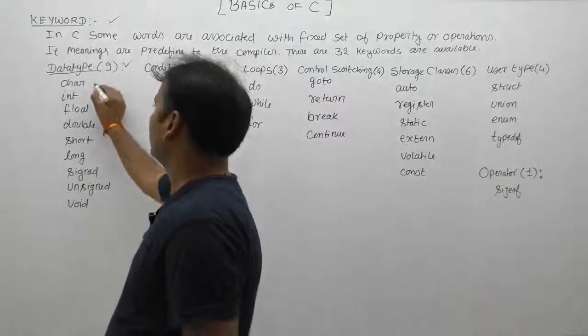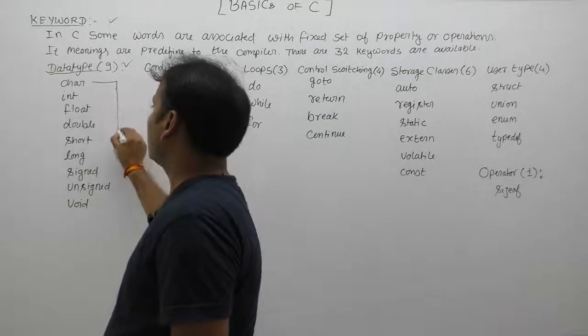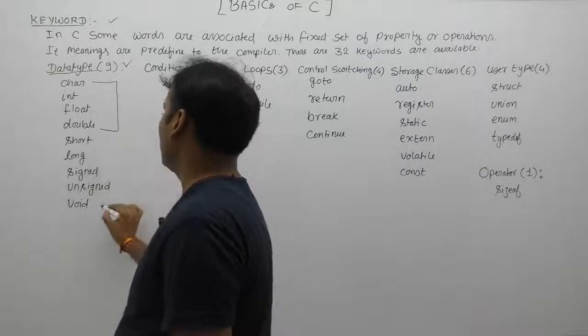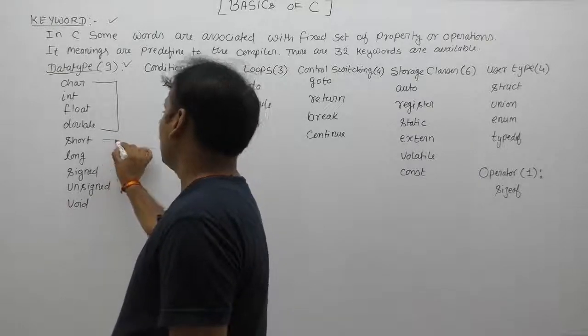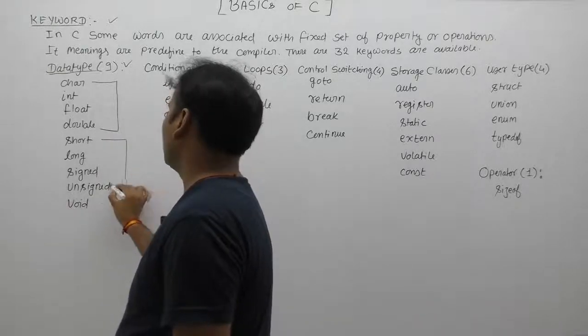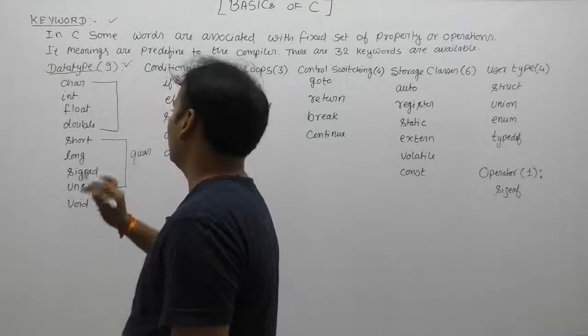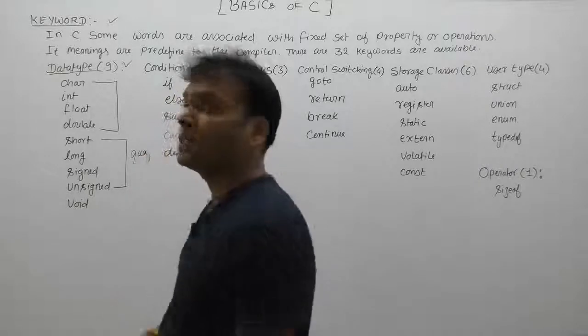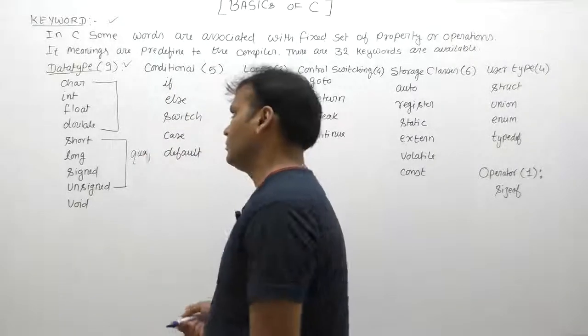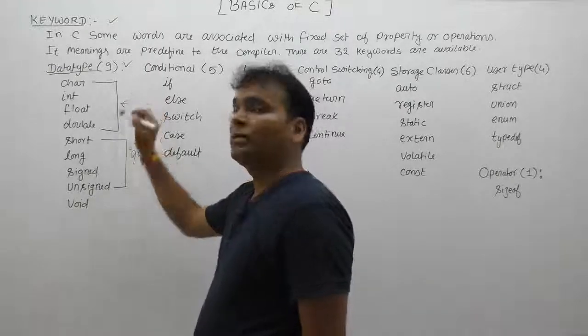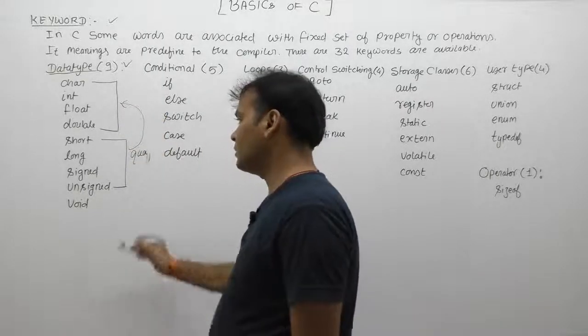The first 4 keywords are related directly to data types. The next 4 keywords are related to qualifiers. We will discuss qualifiers in detail during data types. Qualifiers are used with data types and variable declarations.